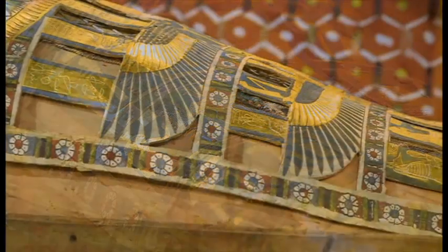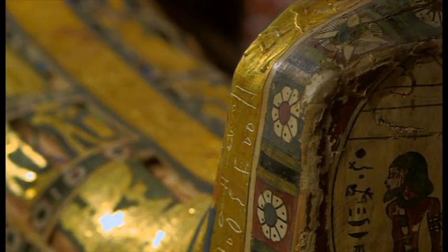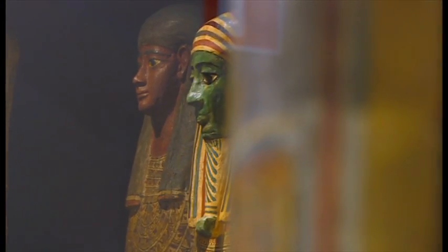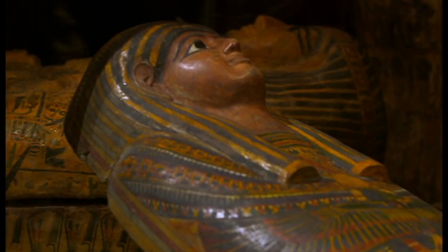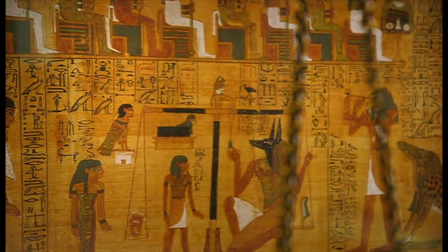Underground in the vault of a former bank in central Stockholm lies an Egyptian priest. His remains are one of eight mummies which belong to the Museum of Mediterranean and Near Eastern Antiquities. He lived in the 3rd century BC in Thebes, modern day Luxor.